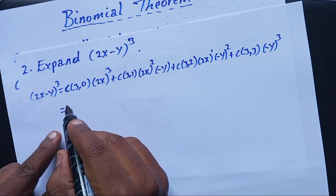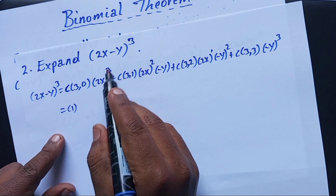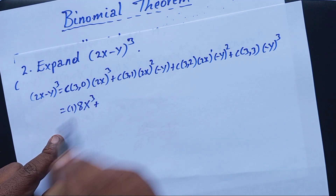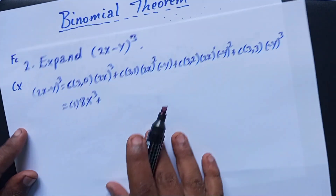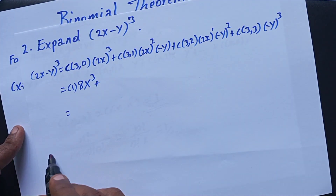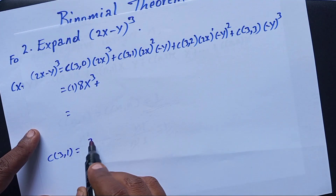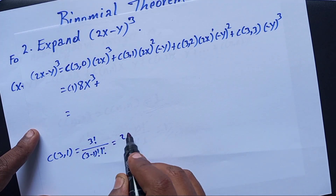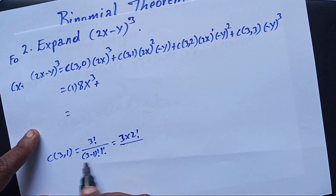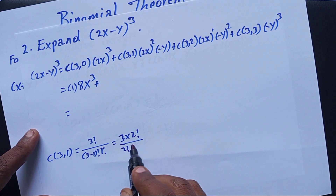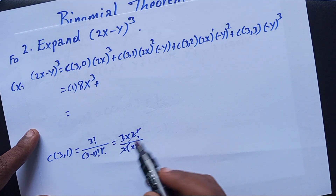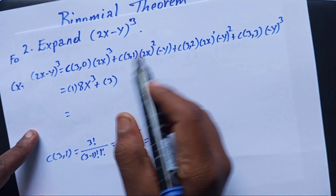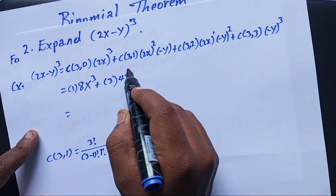So C(3,0) times (2x)^3 gives 8x^3. Now let us calculate C(3,1): 3! over (3-1)! times 1! equals 3 times 2! over 2! times 1. The 2! cancels, giving 3. And (2x)^2 equals 4x^2, with the -y factor.